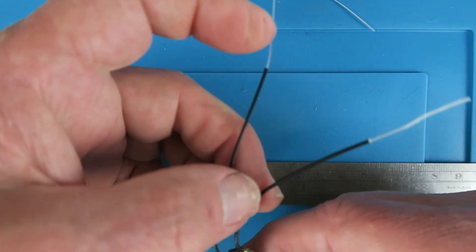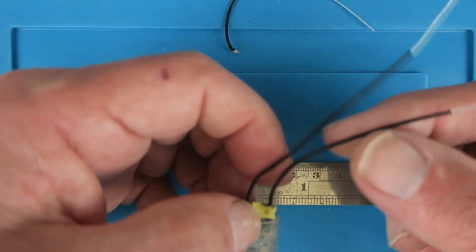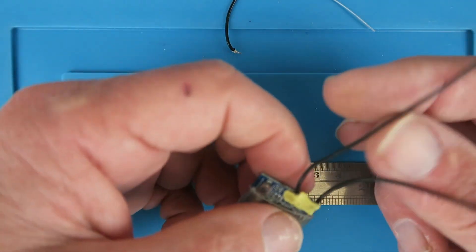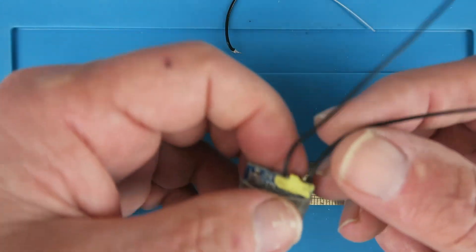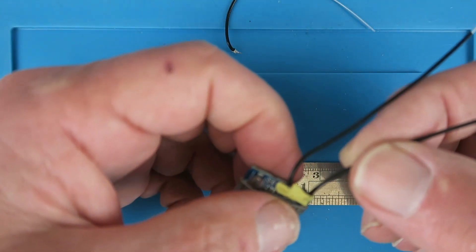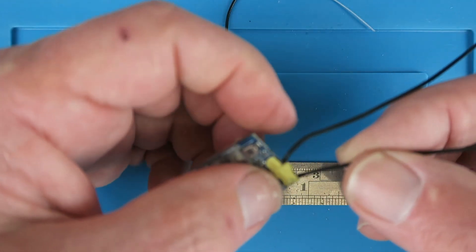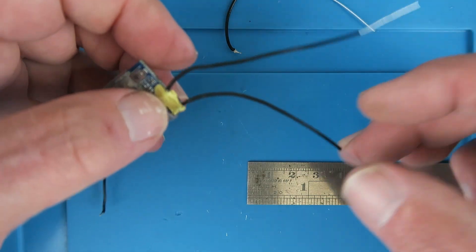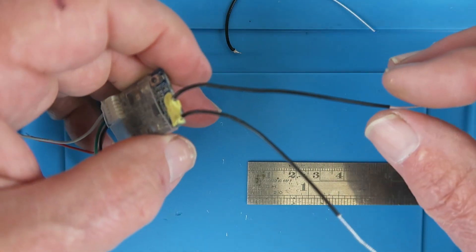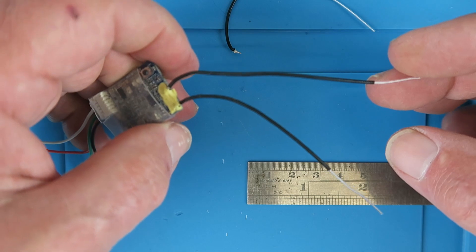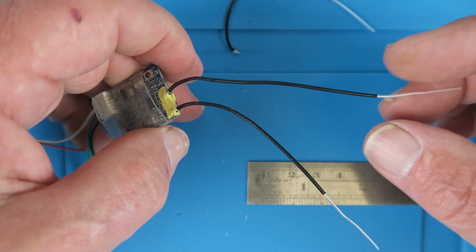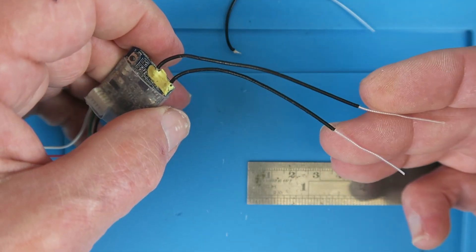Now I can hear the purists already screaming: but now the outer shield is not the same length as it was originally, and this has to be a multiple of the quarter wavelengths, yada yada yada. In reality I don't believe it makes any difference. You may be able to measure something in the lab, but I'm not often flying in the lab so this will work for me.